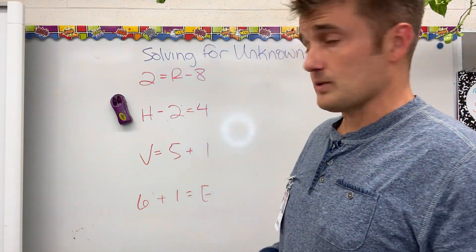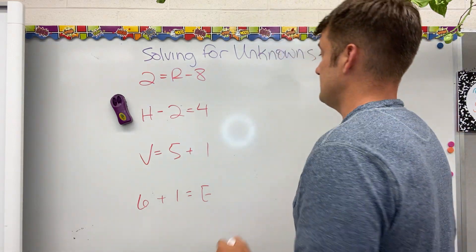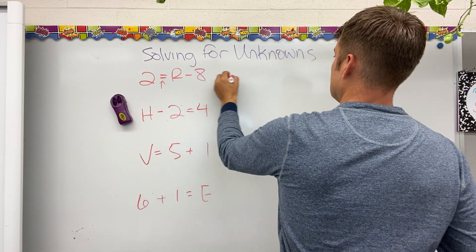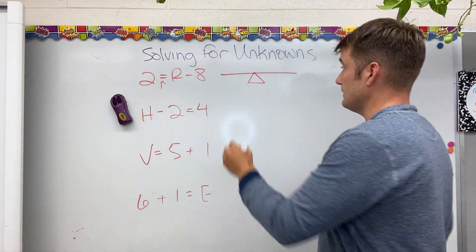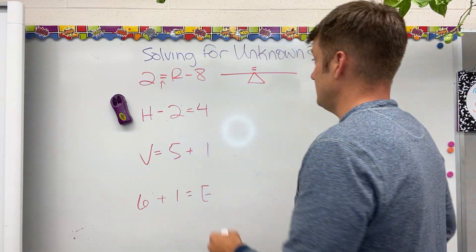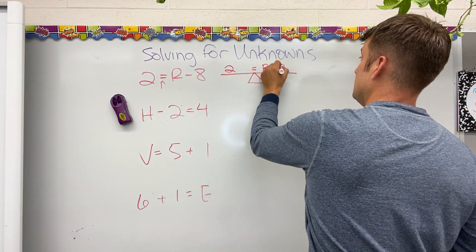So 2 equals r minus 8. Remember, this is my balancing point. If I have an equation, both sides of the equal sign need to be balanced. This side is 2, this side is r minus 8.